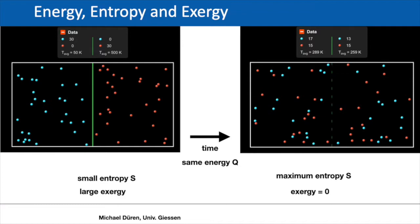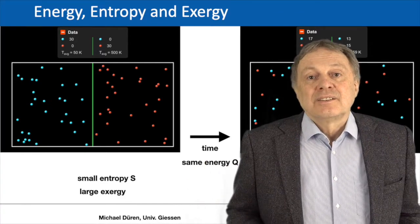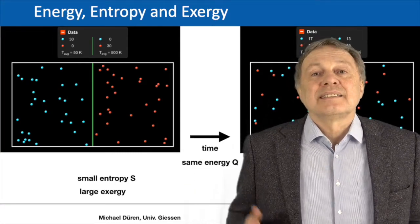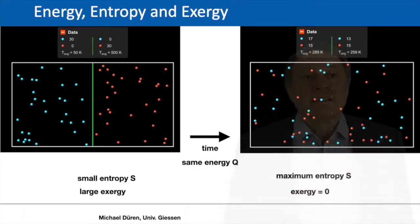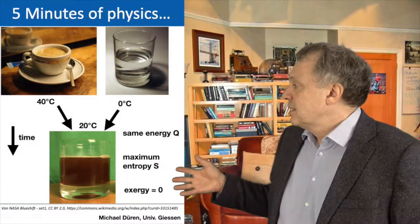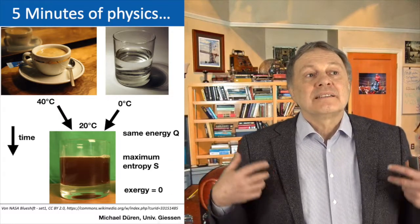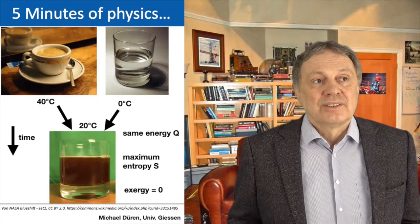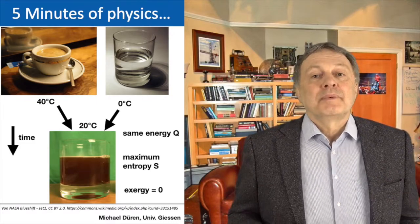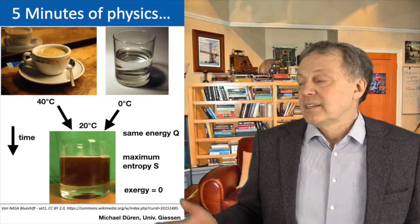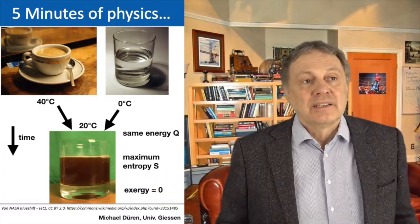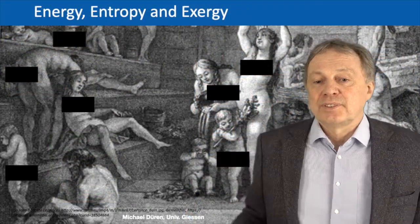At some point the entropy reaches a maximum when it is completely mixed and the temperatures of the two colored groups of atoms are the same. The exergy is now zero because you cannot run the Stirling engine anymore in this box. But from energy conservation we know that the final state has the same energy as the initial state — the final temperature of the mixture is just the average temperature of the two sides. The same applies to the coffee: mixing the espresso and the cold water conserves energy, but now the coffee has maximum entropy and its exergy is zero, so we cannot run our machine on it anymore.